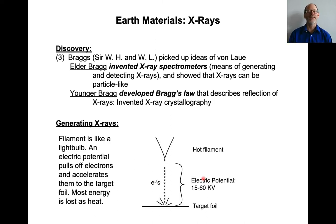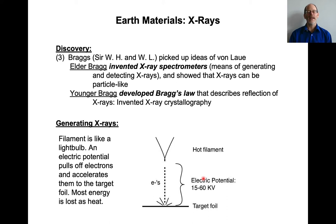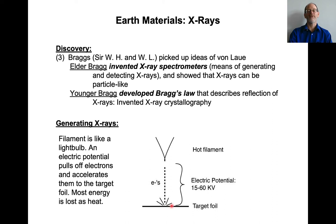So how do you make an x-ray? An x-ray is a little bit like a light bulb. You have this filament metal and you pass a current through it — now it's really hot. You subject it to a high electric potential, 15 to 60 kilovolts. If you have an electric potential, it will pull electrons off of that filament and accelerate them in the direction of the electric potential. When the electrons hit a material — in this case, a target foil of metal —